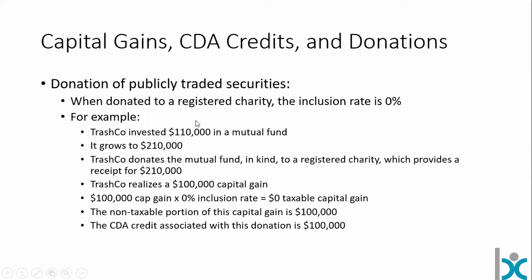TrashCo invests $110,000 in a mutual fund that grows to $210,000, then donates it in kind to a registered charity, providing a receipt for $210,000. TrashCo can use that receipt to offset $210,000 of income. TrashCo itself has a $100,000 capital gain with a 0% inclusion rate — zero taxable capital gain — meaning the full $100,000 is the non-taxable portion. The CDA credit associated with this donation is $100,000, so TrashCo can pass up to $100,000 tax-free to its shareholders if it has the cash on hand.